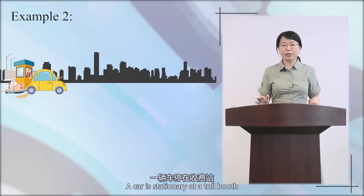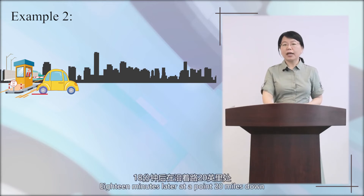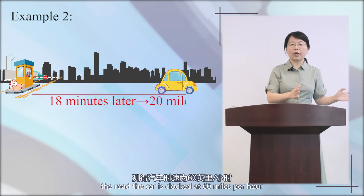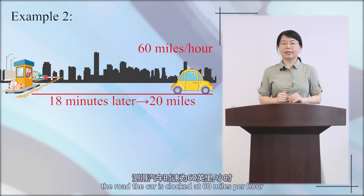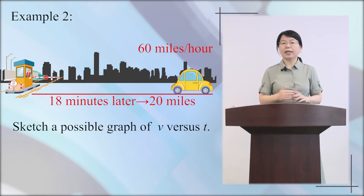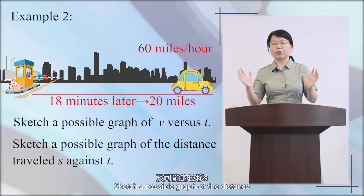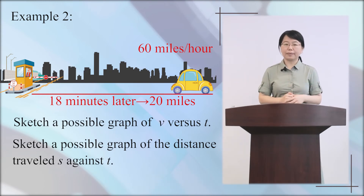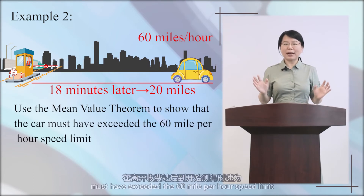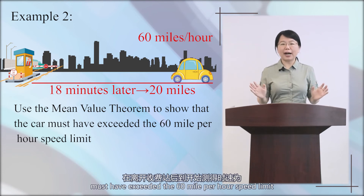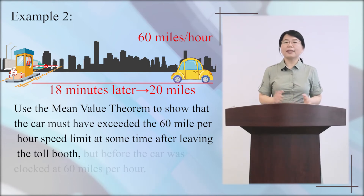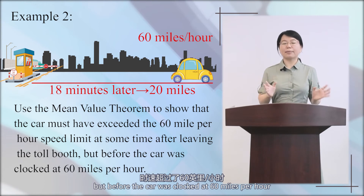A car is stationary at two toll booths. Eighty minutes later, at a point 20 miles down the road, the car is clocked at 60 miles per hour. Could you sketch a possible graph of v versus t? And could you sketch a possible graph of the distance traveled s against t? And use the mean value theorem to show that the car must have exceeded the 60 miles per hour speed limit at some time after leaving the toll booths, but before the car was clocked at 60 miles per hour.